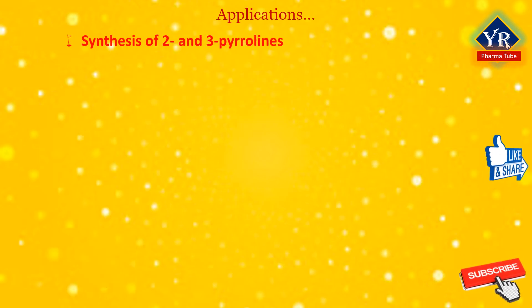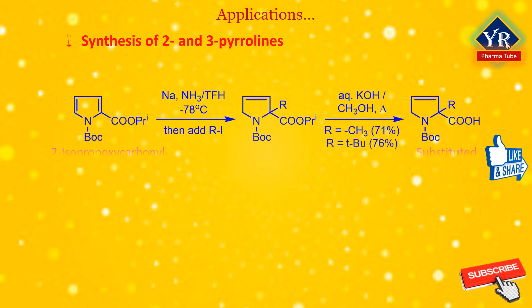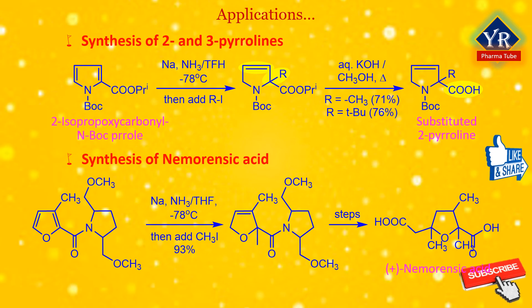In the synthesis of 2 and 3 pyrroles, Birch reduction reduces isopropoxycarbonyl N-butyloxycarbonyl pyrrole and then alkylates electron-deficient 2 and 3 substituted pyrroles. This reductive alkylation method proved to be very efficient for the synthesis of substituted 2 and 3 pyrroles respectively. An alcohol as a proton source is not necessary for the reduction to occur in this reaction.